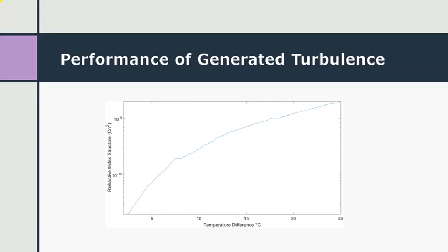The graph on the screen shows the correlation between the increase in temperature with the increase of turbulent strength. This explains why the laser beam would wobble more with an increase in temperature difference.